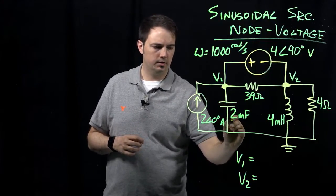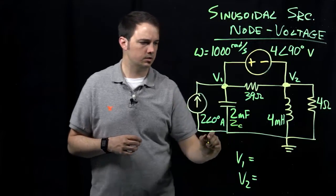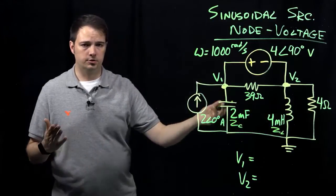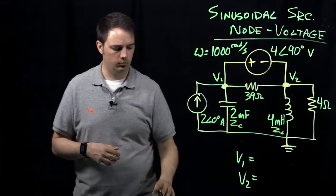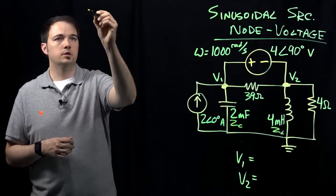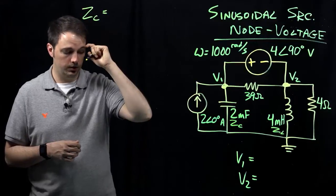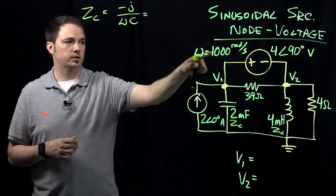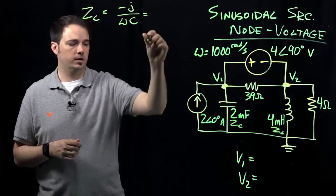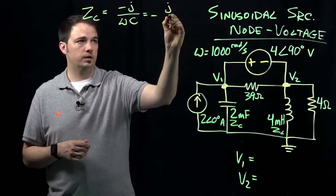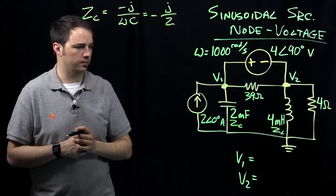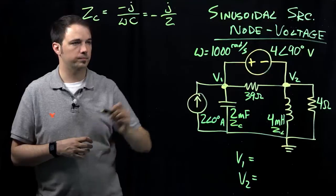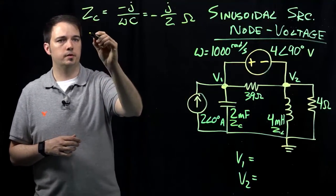Let's indicate this impedance of my capacitor as ZC and the impedance of my inductor as ZL. The impedances of resistors are just the same value as the resistance. For ZC this would be minus J over omega C, and we're given omega as a thousand, capacitance of two millifarads, so this evaluates out to minus J over two. The two millifarads times a thousand balances out to give us a quantity of two. This would be in units of ohms.